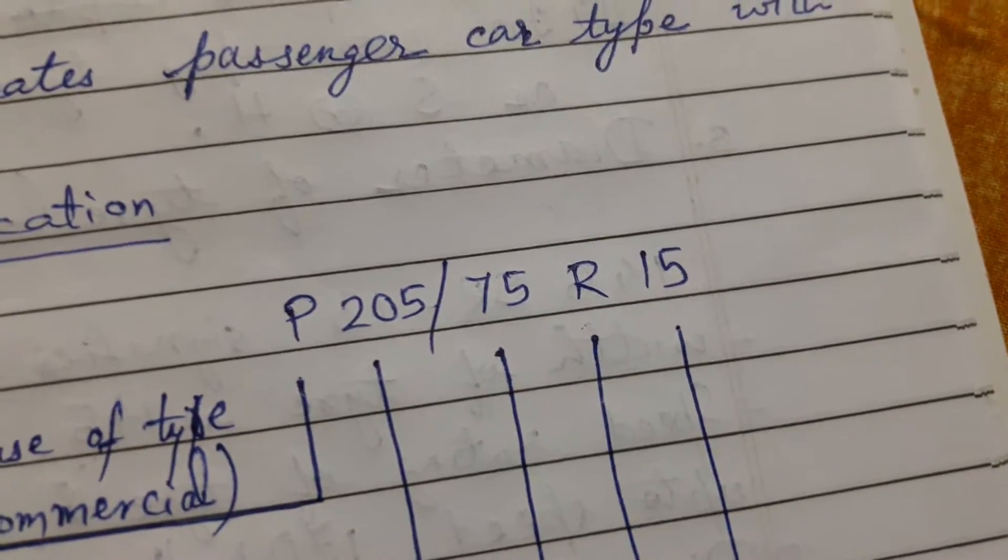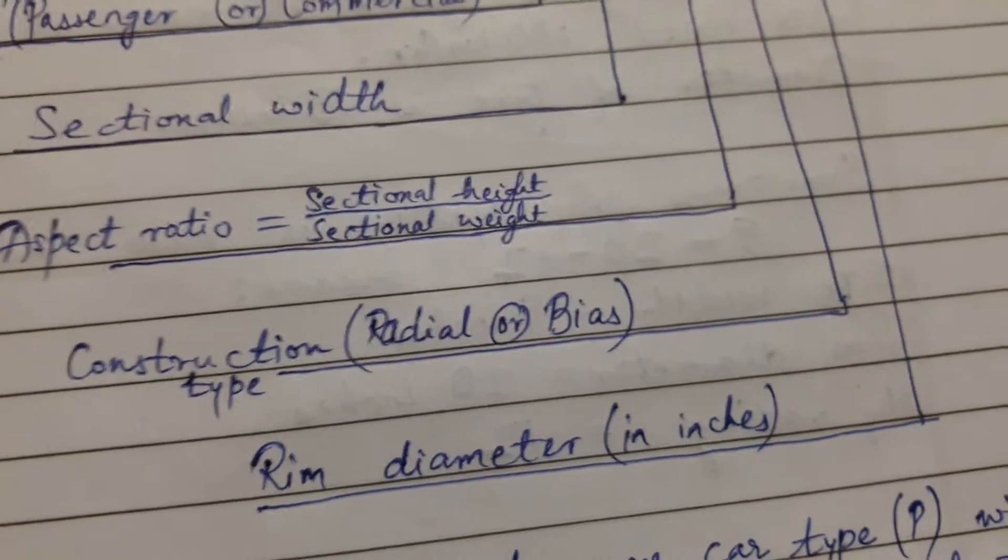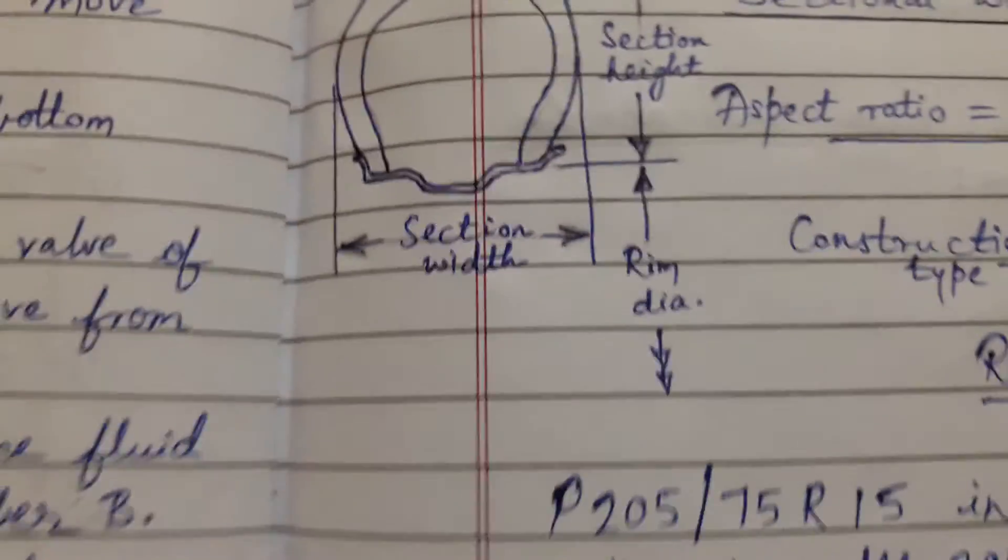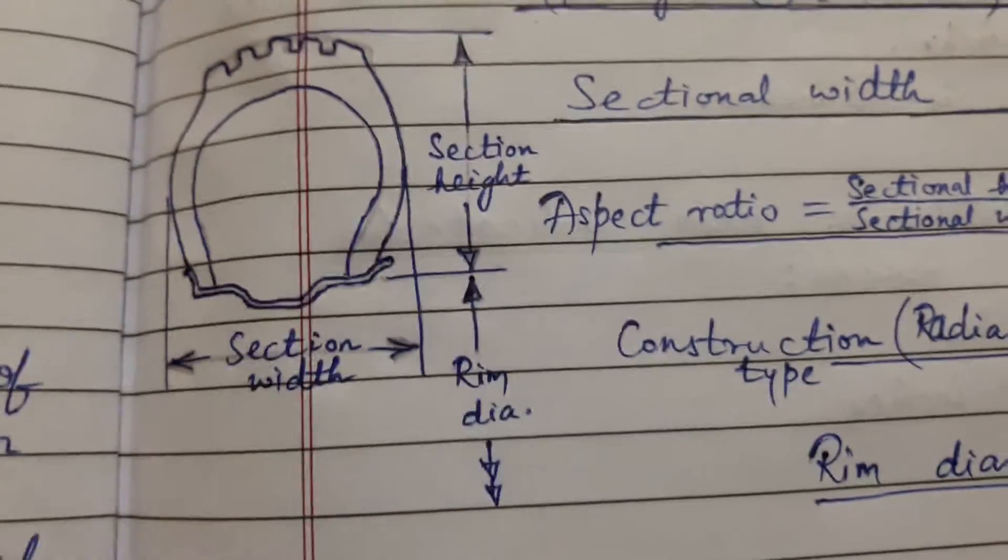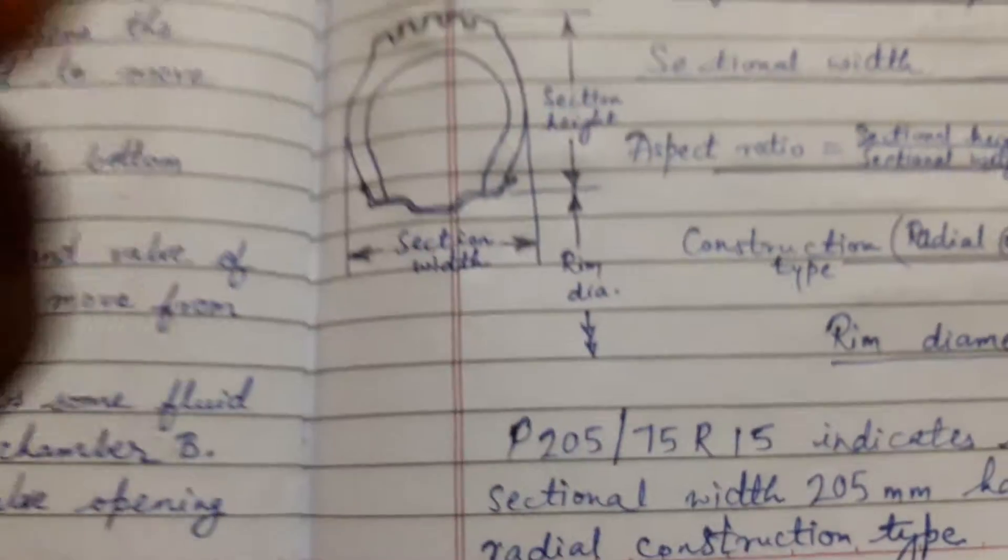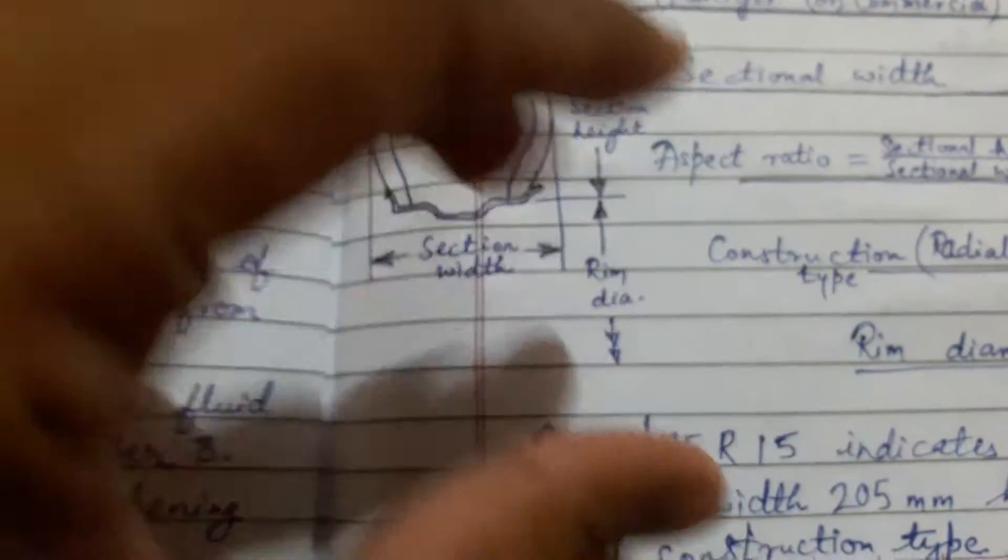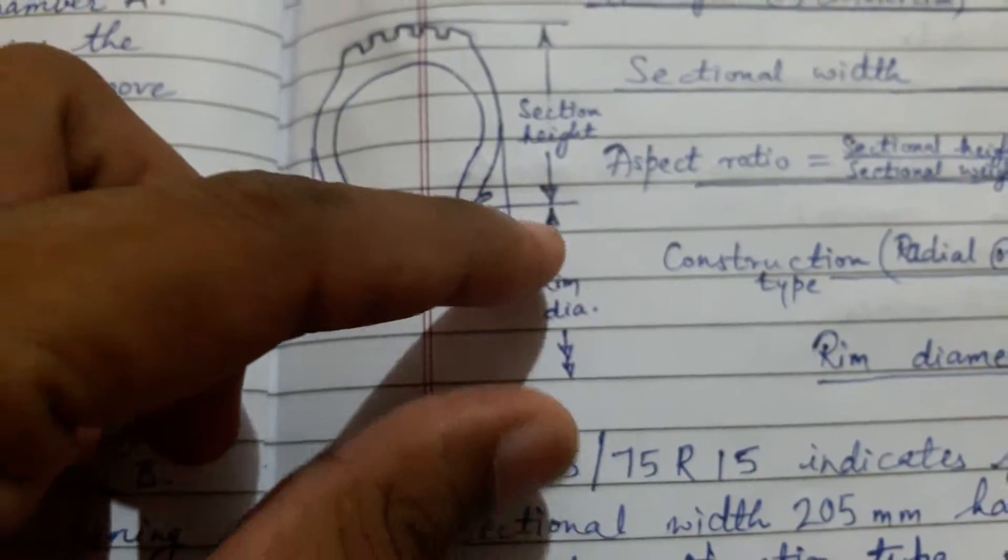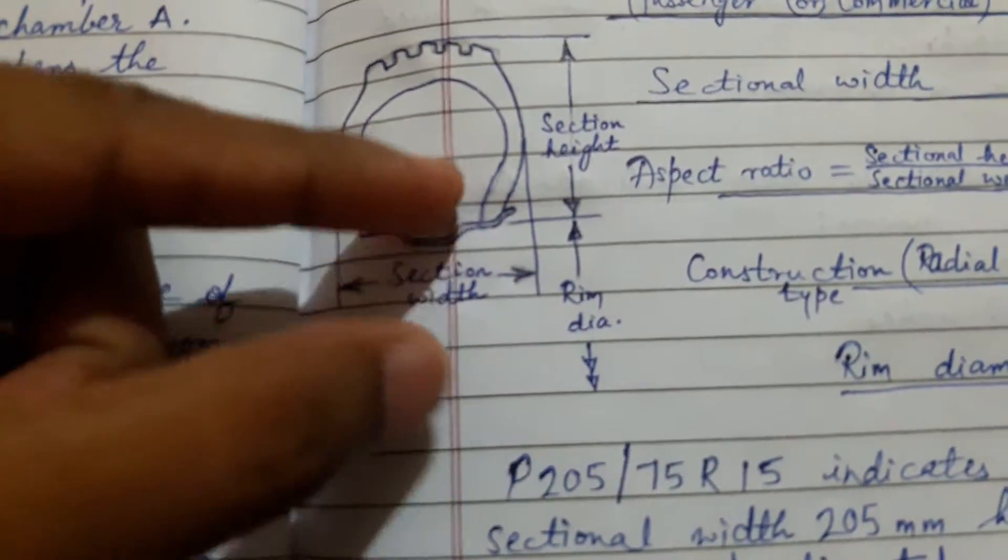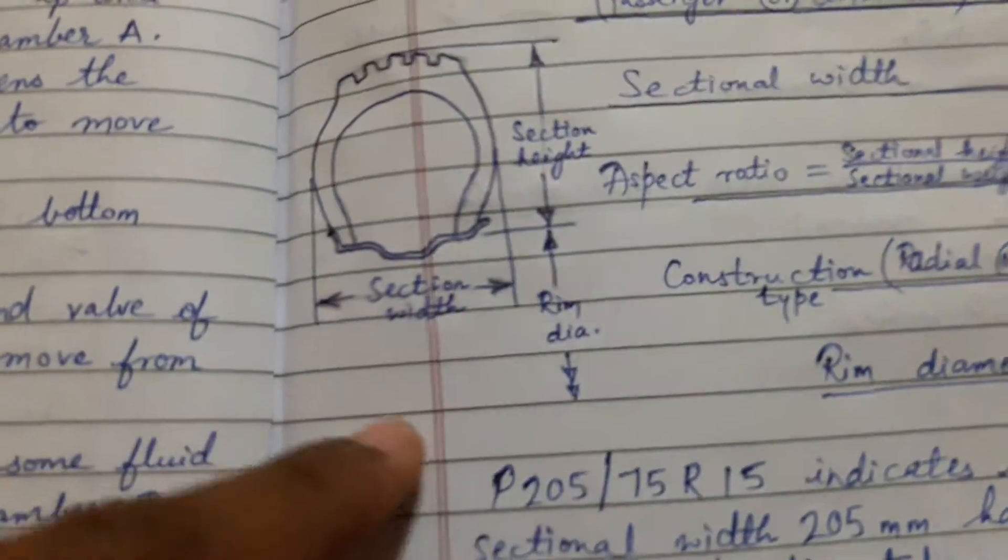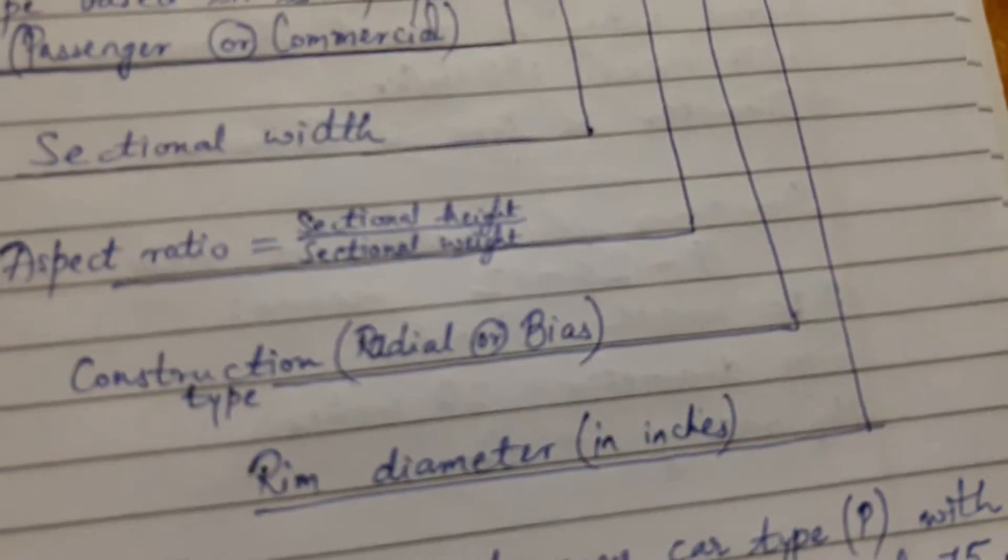The last one is 15. That gives the rim diameter in inches. Here you can see the rim diameter. So this is the complete tire and we have shown a part of the tire over here. This rim diameter is the inner diameter which is given in the another diagram also.